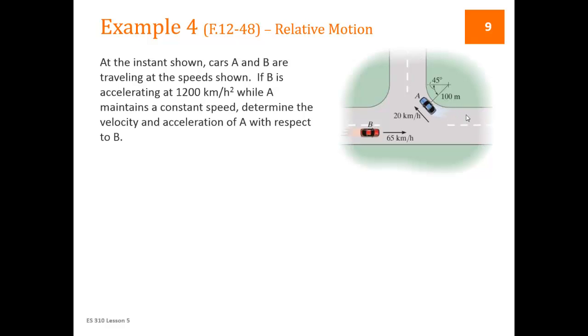Remember from last lesson, the acceleration of a car that is making a curve has two parts. It's got the, in normal tangential coordinate systems, it's got the change in velocity part, which is the tangential part, and it's got the change in direction part, which is the normal part. So we'll see that in a second.